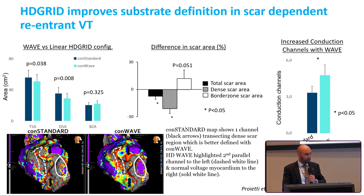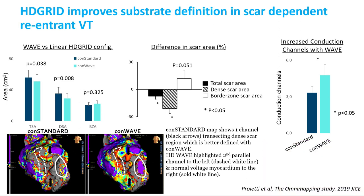The HD grid mapping catheter was a paradigm shift in substrate resolution to define scar. Work from our group showed that what the HD grid enabled was to refine the resolution of scar—scar was generally smaller, with a smaller dense scar area but a larger border zone. A whole host of studies have shown that scars with greater border zones are more arrhythmogenic.